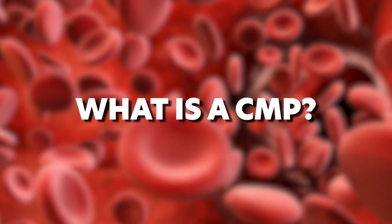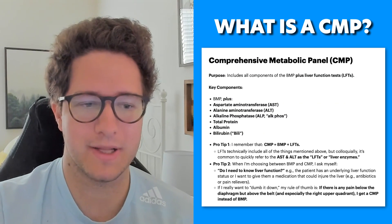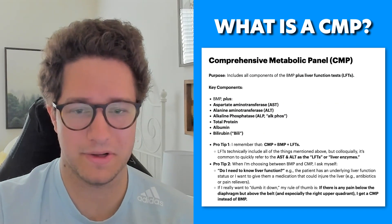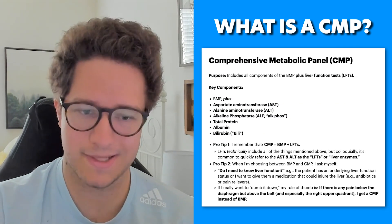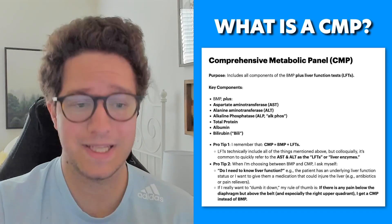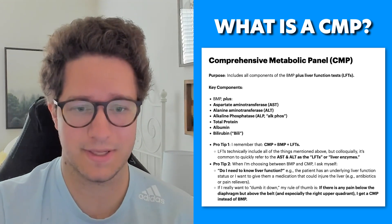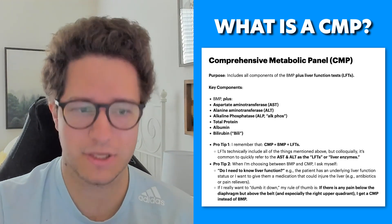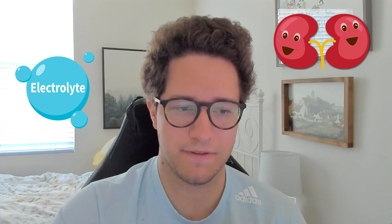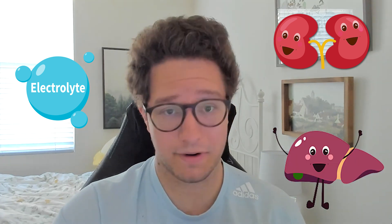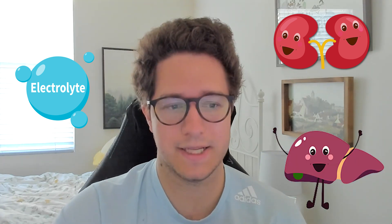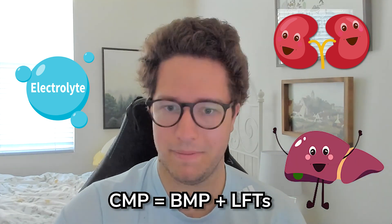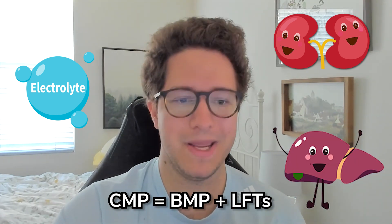So, what is a CMP? A Comprehensive Metabolic Panel is a routine blood test that measures 14 different substances in your blood. It's going to give crucial information about electrolytes, kidney function, and liver function. It's an extension of the Basic Metabolic Panel, or BMP.